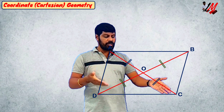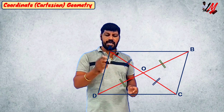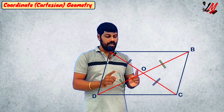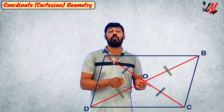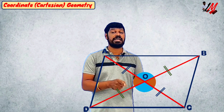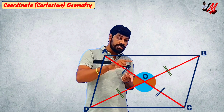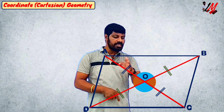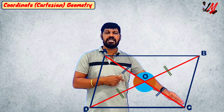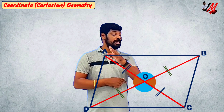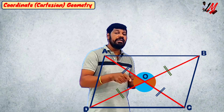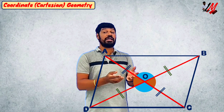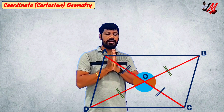What we do is observe that when AC and BD intersect, those two pairs of angles are vertically opposite angles. These two angles are vertically opposite angles: angle AOD equals angle BOC, and angle AOB equals angle DOC. Vertically opposite angles.